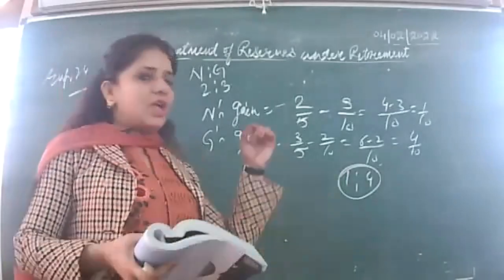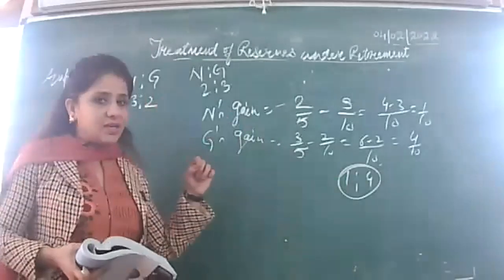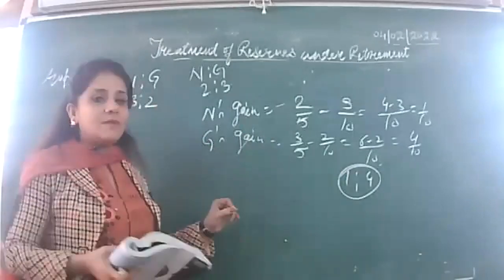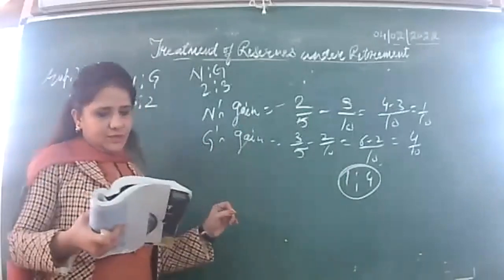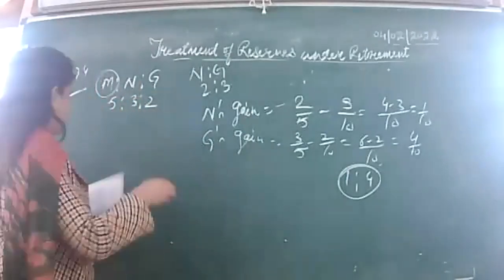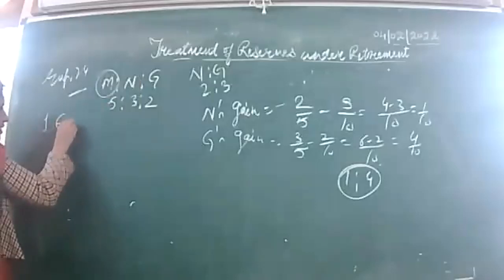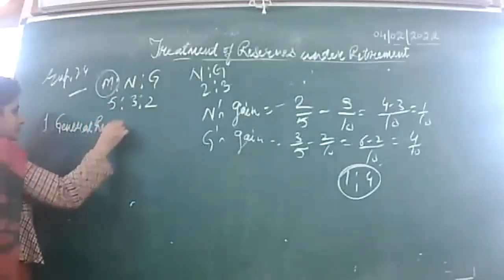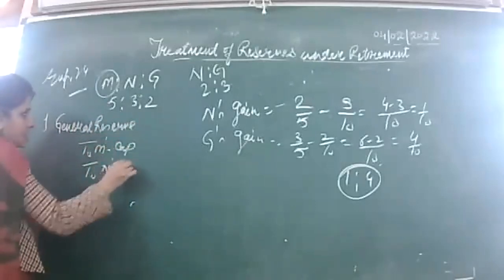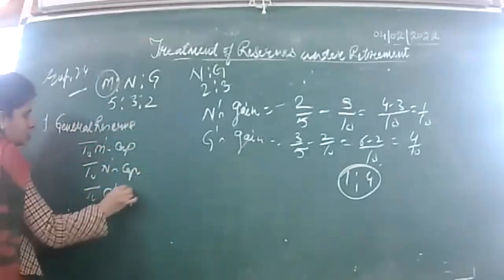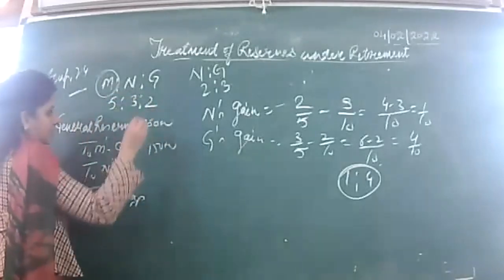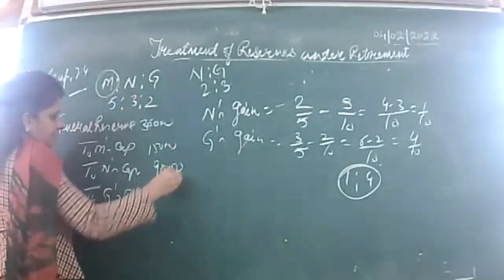Starting with entries: general reserve of 30,000 appears in the balance sheet, dividing among all partners in their old ratio. First entry: general reserve account debit to M's capital, to N's capital, to G's capital. 30,000 — 5/10 is 15,000; 3/10 is 9,000; 2/10 is 6,000. First entry done.